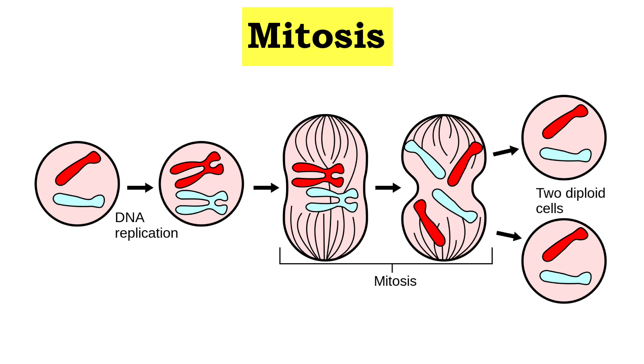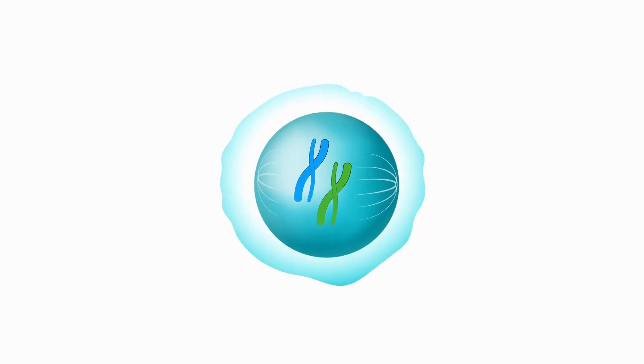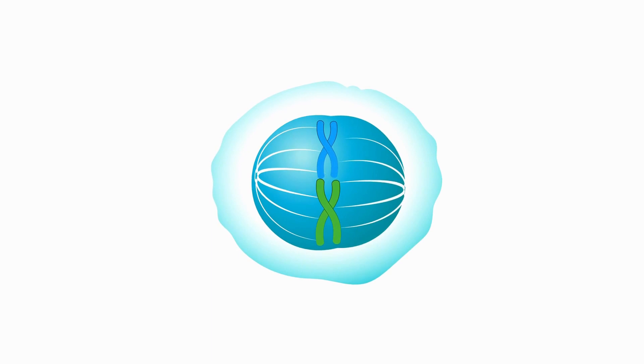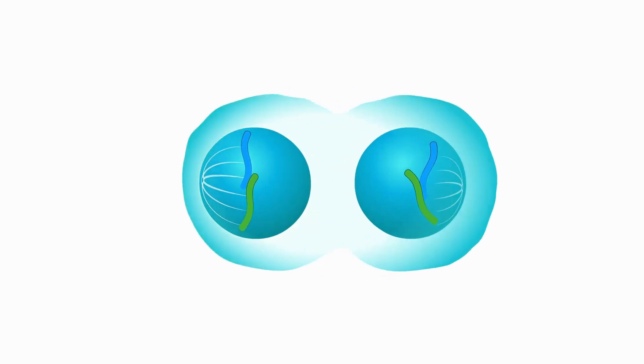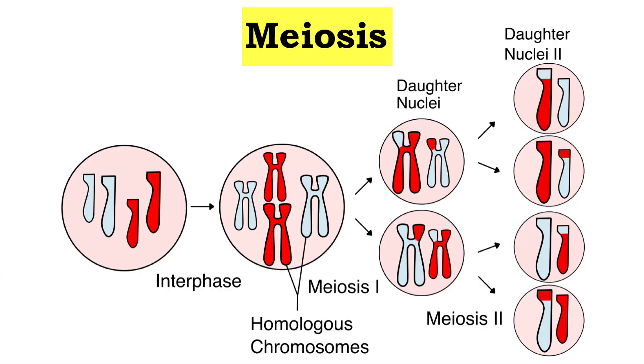Mitosis is basic cell division that occurs in all organisms. Its main purpose is to create new body cells or to replace dying cells. Because of this, it only divides once, resulting in two new daughter cells which have the same amount of chromosomes as their parent cell and are identical to each other.